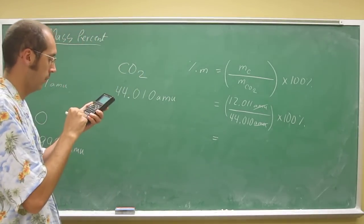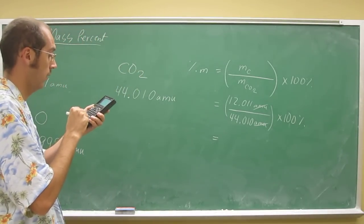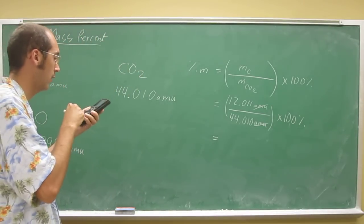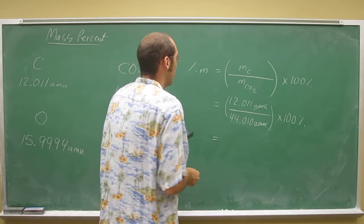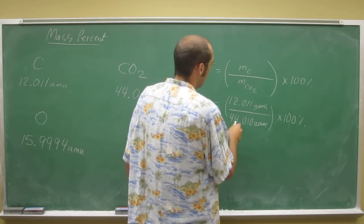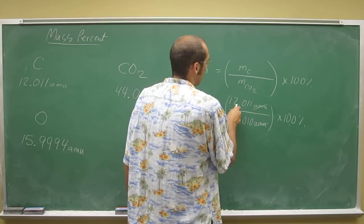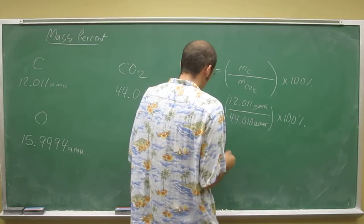So 12.011 divided by the second answer, times 100, gives me... How many sig figs am I going to? One, two, three, four, five.